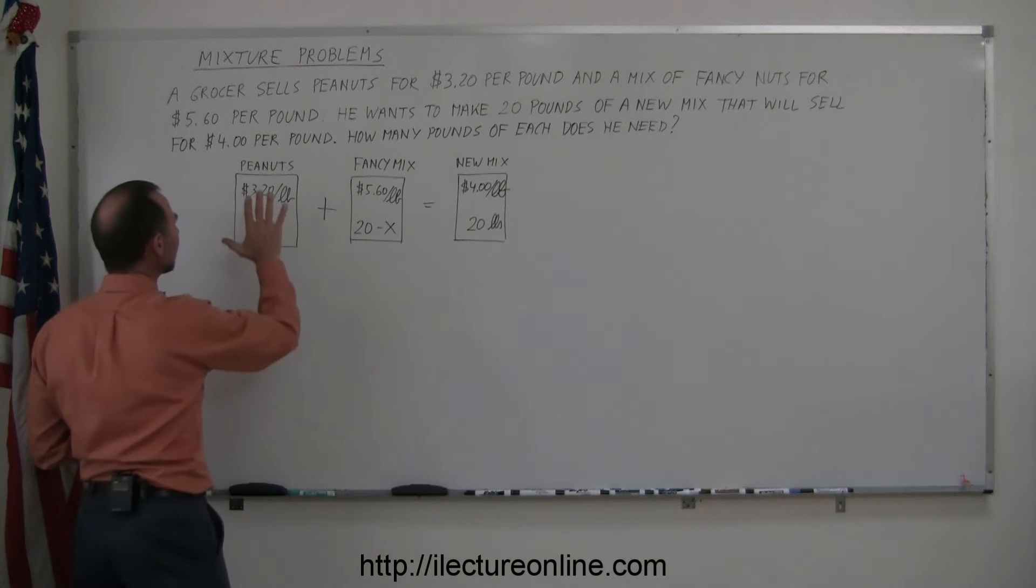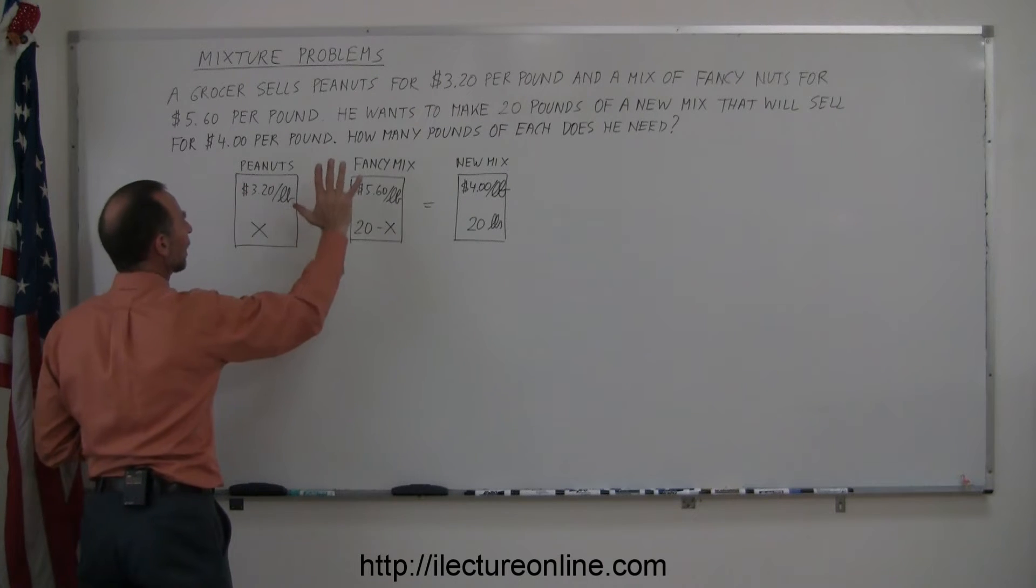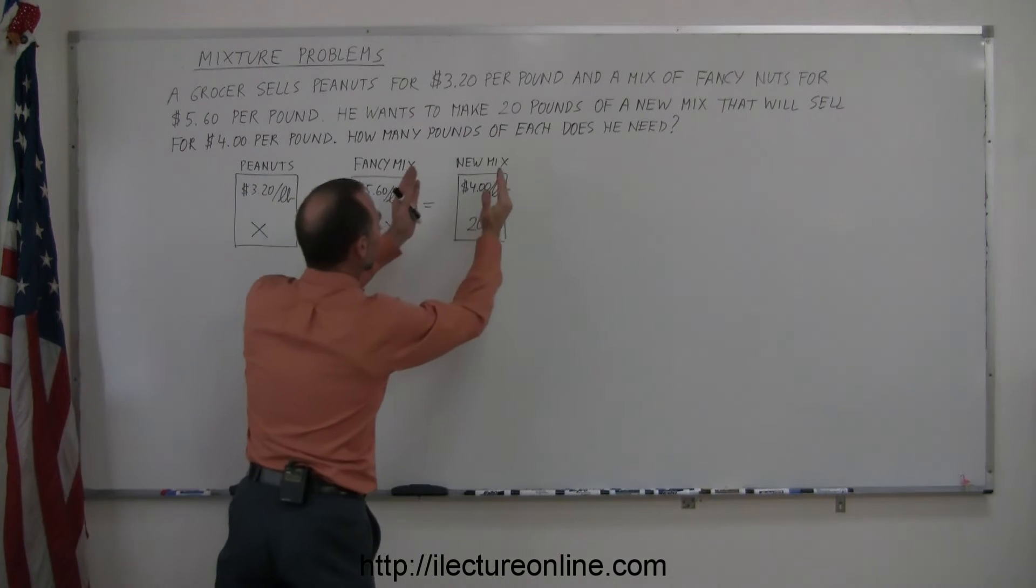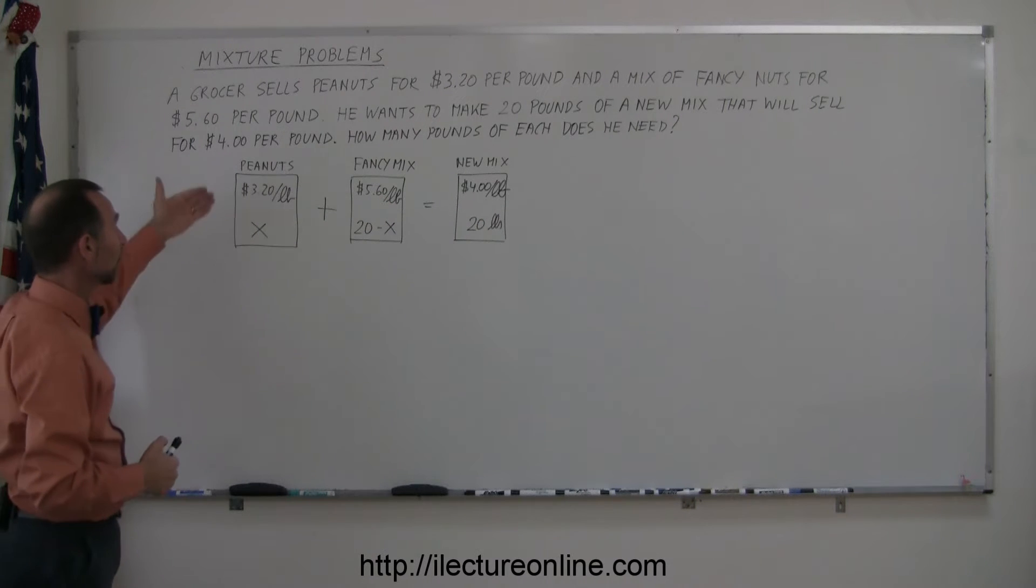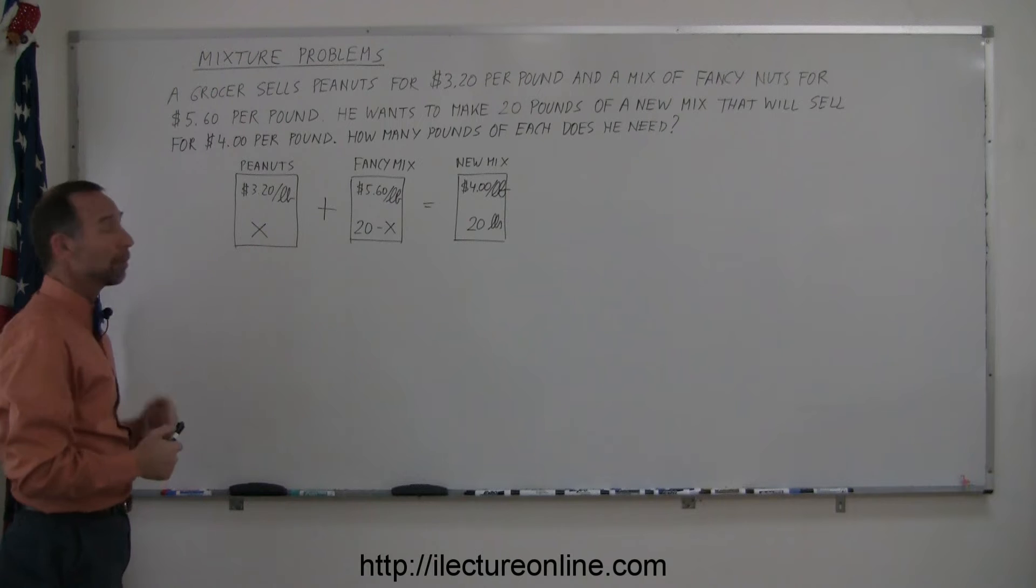The value of this mix plus the value of this mix should add up to the total value of this mix. To find the value of each mix, we simply multiply the price per pound times the number of pounds.